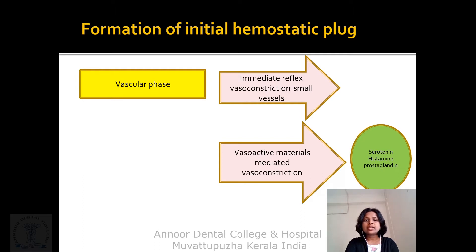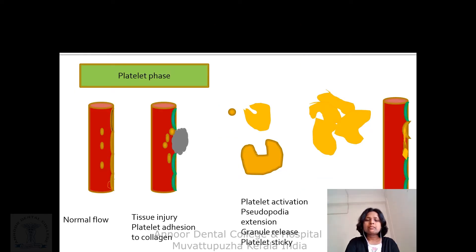In the vascular phase there is immediate reflex vasoconstriction of small vessels and vasoactive material-mediated vasoconstriction. Vasoactive materials are serotonin, histamine, and prostacyclin. In the platelet phase, during normal blood flow there is no activation, but whenever tissue injury happens, platelets adhere to collagen in the basement membrane. Platelet activation occurs by pseudopod extension and granular release, making platelets sticky, followed by platelet aggregation.